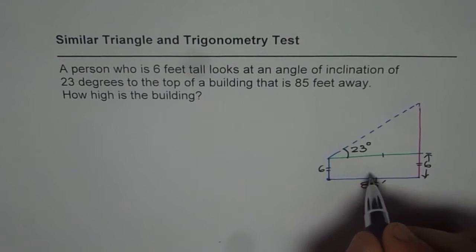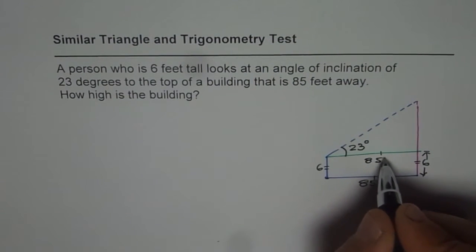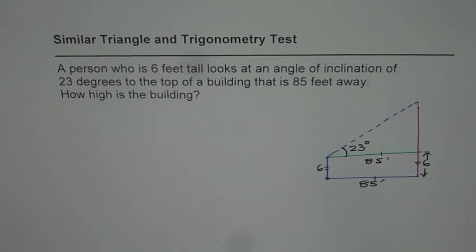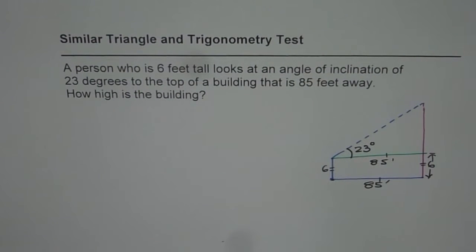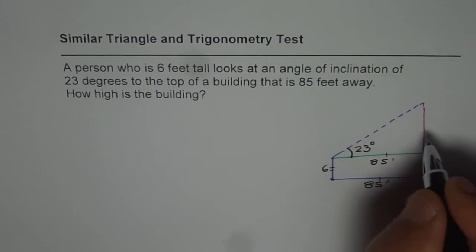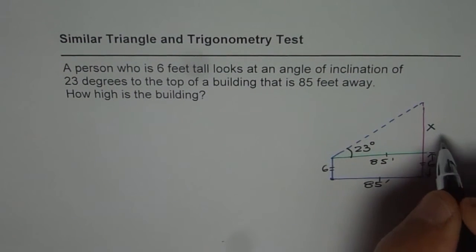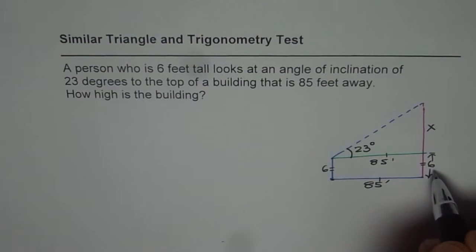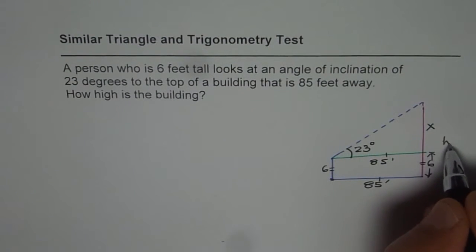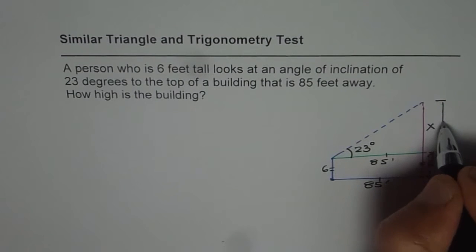Since this is 85, that distance should also be 85 feet, correct? Now we need to find the height of the building. So let us find this value x and height will be x plus 6, correct? So the height will be actually x plus 6.